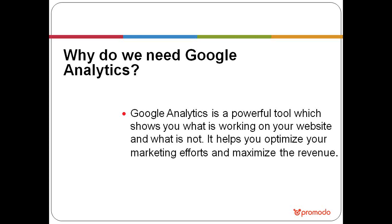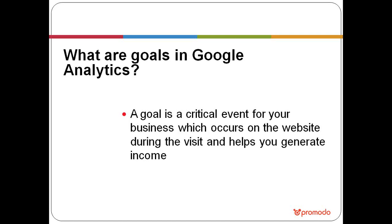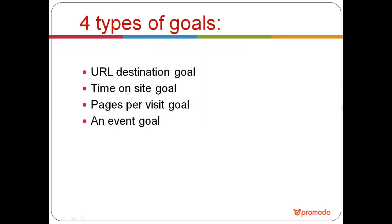To get the most out of Google Analytics data, we advise you to customize the account to your business needs. First, you may set up goals. In Google Analytics, a goal can be defined as a critical event for your business that occurs during a user's visit and contributes to your overall income. All goals in Google Analytics can be divided into four groups: URL destination goal, time on site goal, pages per visit goal, and event goal.